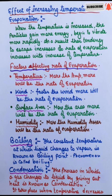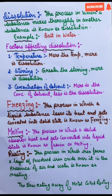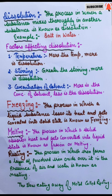Now some important definitions. Boiling: the constant temperature at which a liquid changes to vapour is known as the boiling point, and the phenomenon is called boiling. Condensation: the process in which a gas changes to liquid by giving out heat is known as condensation — it takes place when temperature decreases. Dissolution: the process in which a substance mixes thoroughly in another substance is known as dissolution. For example, salt dissolves in water.